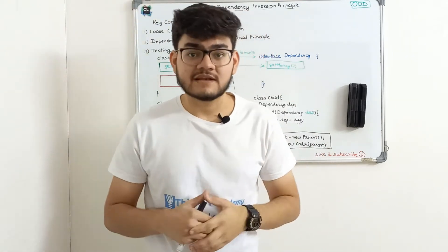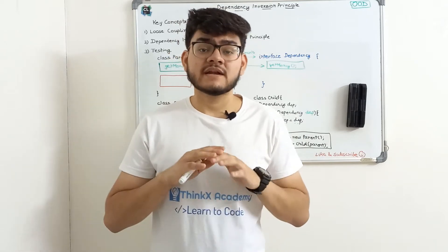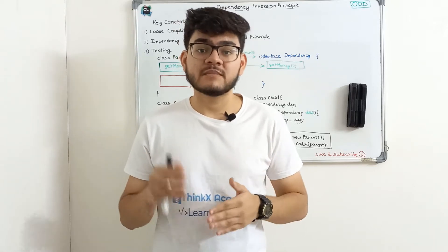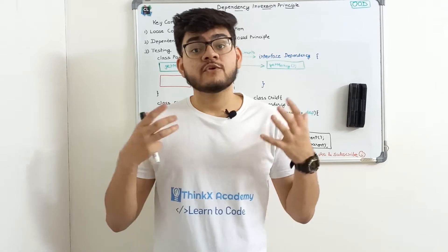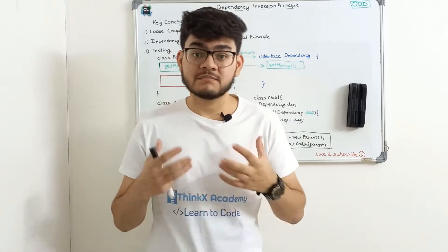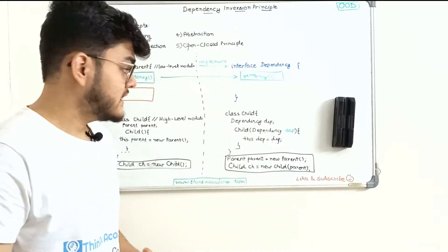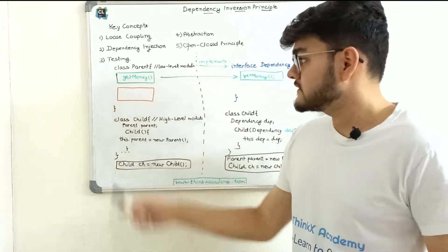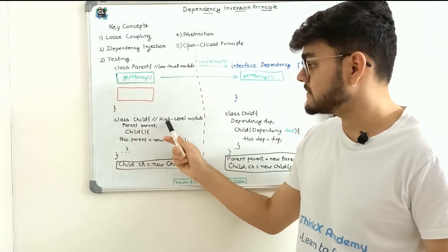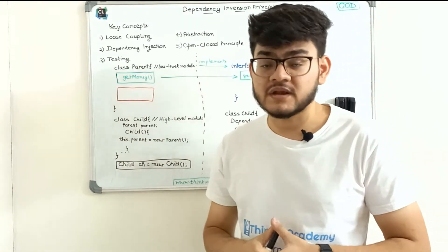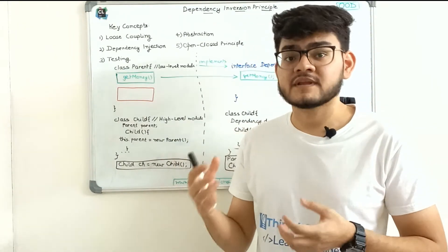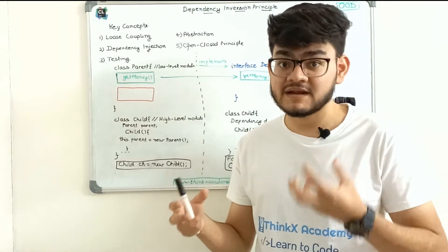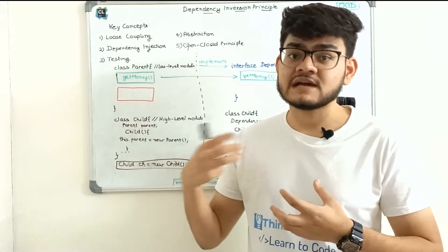First, we need to understand what a dependency is. Let's take this parent-child problem and generalize it. There is also a task for you: make sure you apply this concept to your own example to understand it more deeply. Here I've created a class Child, which is the higher-level module. When we have two objects that depend on each other, the child is dependent on parent — so parent is the lower-level module and child is the high-level module. Similarly, in the car-engine problem, the engine is the low-level module and car is the high-level module.